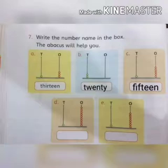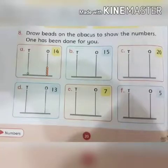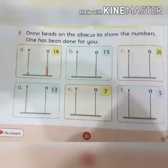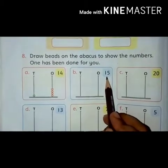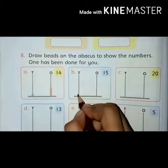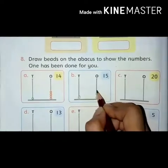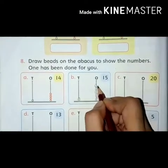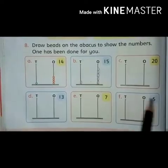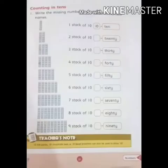Three have been done for you. Two are left — do these by yourself. Question number eight: Draw beads on the abacus to show the numbers. One has been done for you. Look at the first abacus — there is one bead on the tens rod and four beads on the ones rod, so fourteen is written here. For fifteen, we have to draw one bead on the tens rod and five beads on the ones rod: one, two, three, four, and five. Two have been done for you. Four are remaining — do these by yourself.